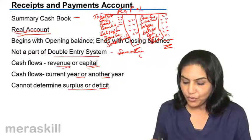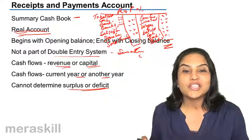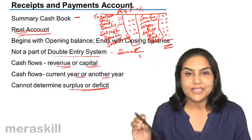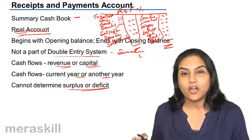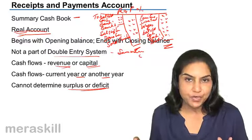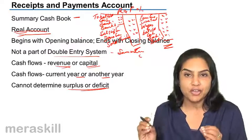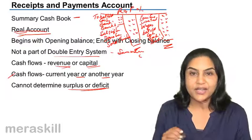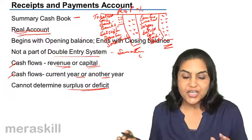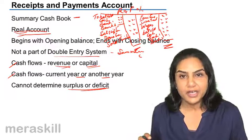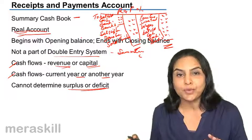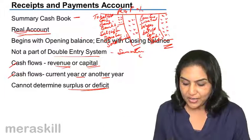Obviously we cannot know profit or loss from here, because we do not have distinction between revenue and capital. We cannot know surplus or deficit. All we can do is confirm that the closing balance of cash and balances at the banks are correct by recording all the cash inflows as well as outflows. A receipts and payments account is a summary cash book which records all cash inflows and outflows, whether they relate to the current period or another period, whether they are revenue or capital. Its nature is a real account, and because it reflects only actual cash flows, we cannot determine surplus or deficit.